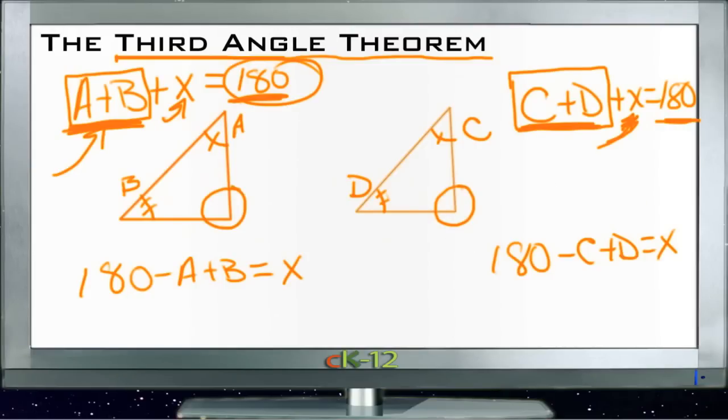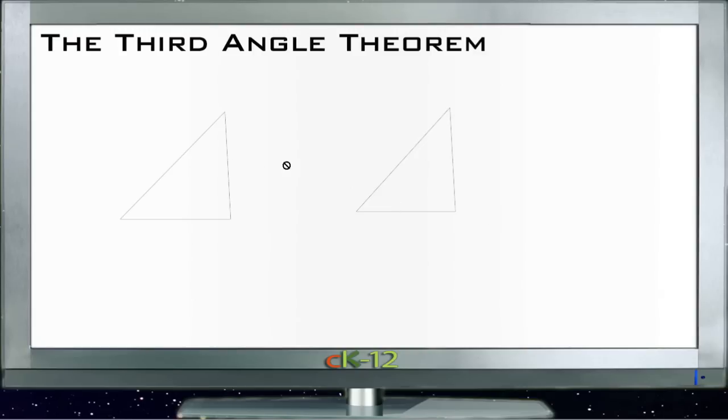So that's what the Third Angle Theorem tells us. It tells us that with any two triangles, if you know any two angles on those two triangles to be congruent, the third angle is also congruent. Now let's see how it works with example problems.